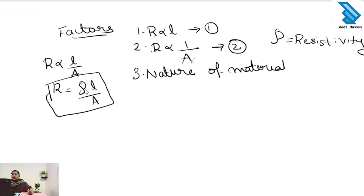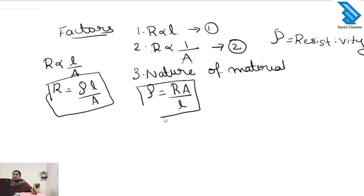From this equation we get the equation for resistivity. Rho is equal to R times A divided by L. This is the equation to find the resistivity of the conductor.